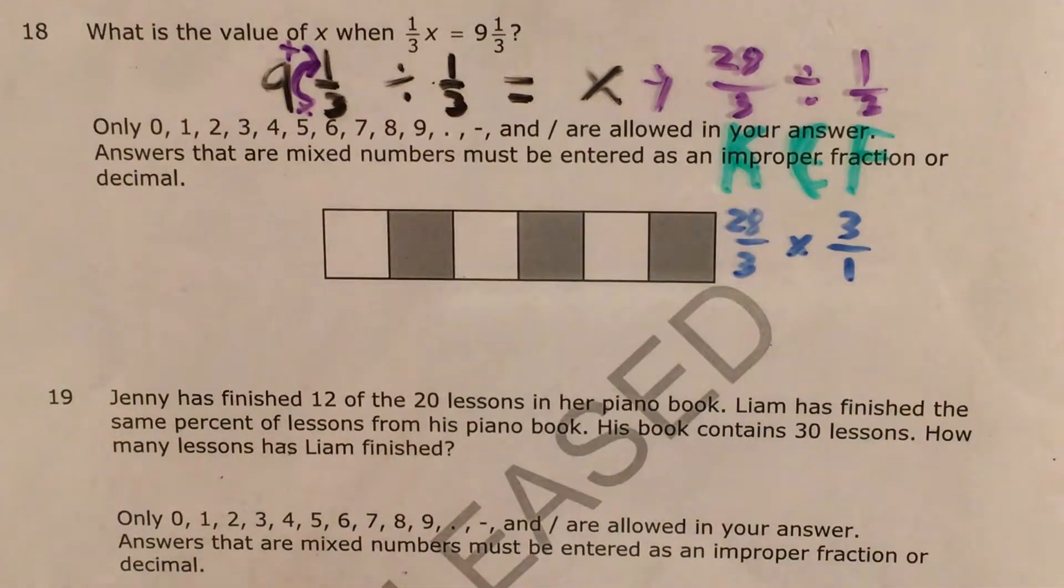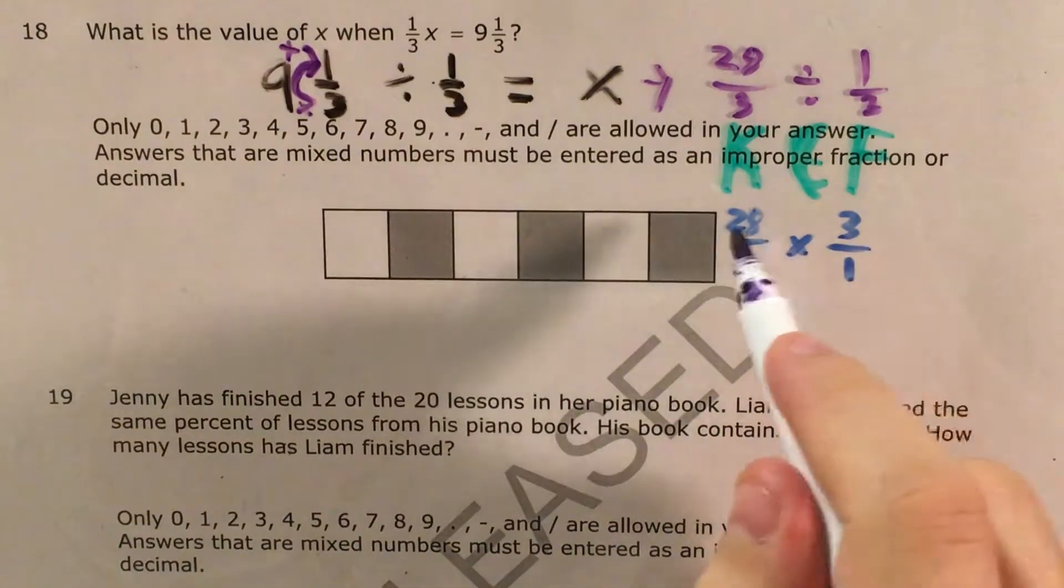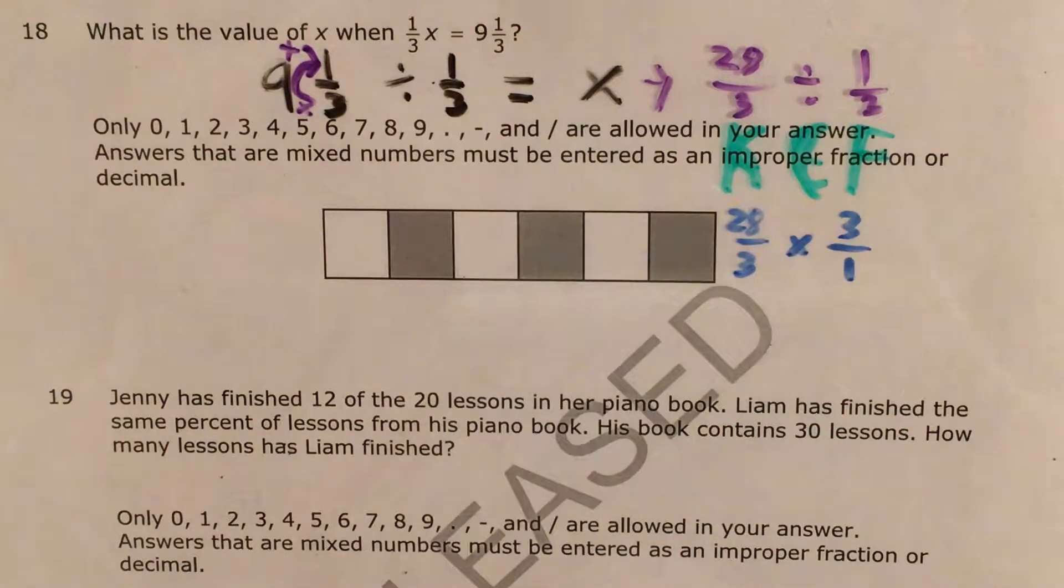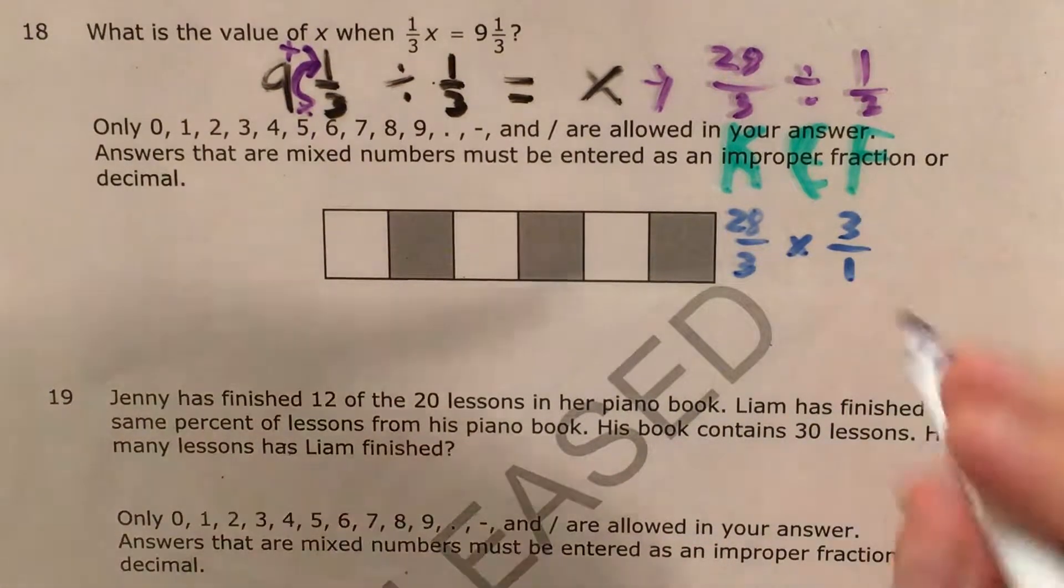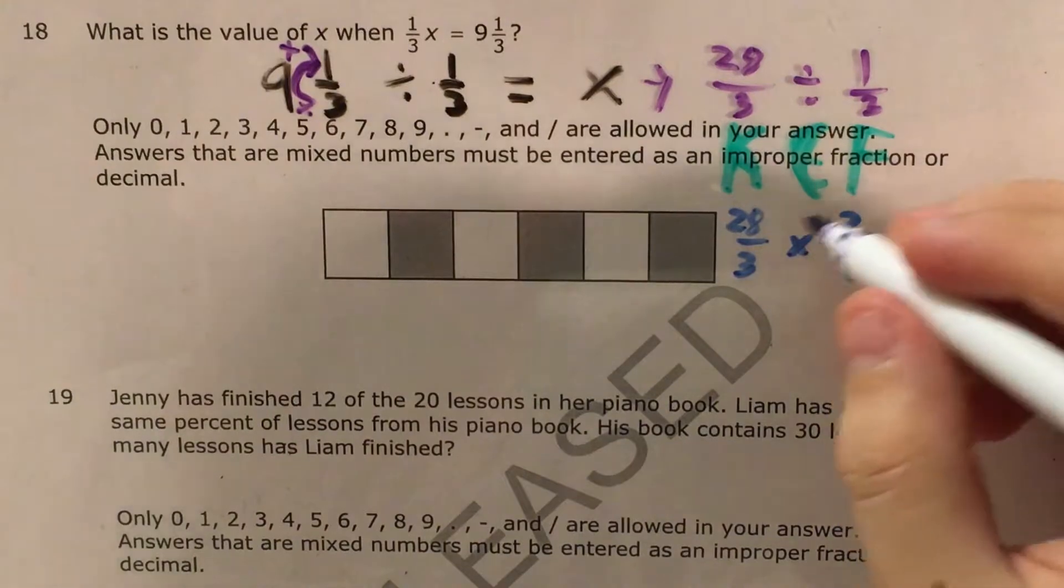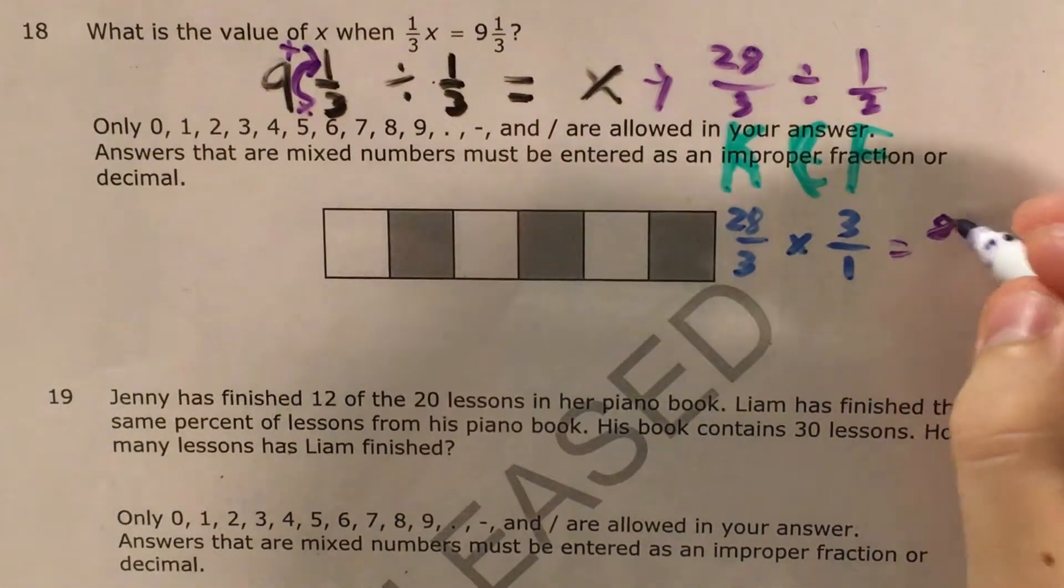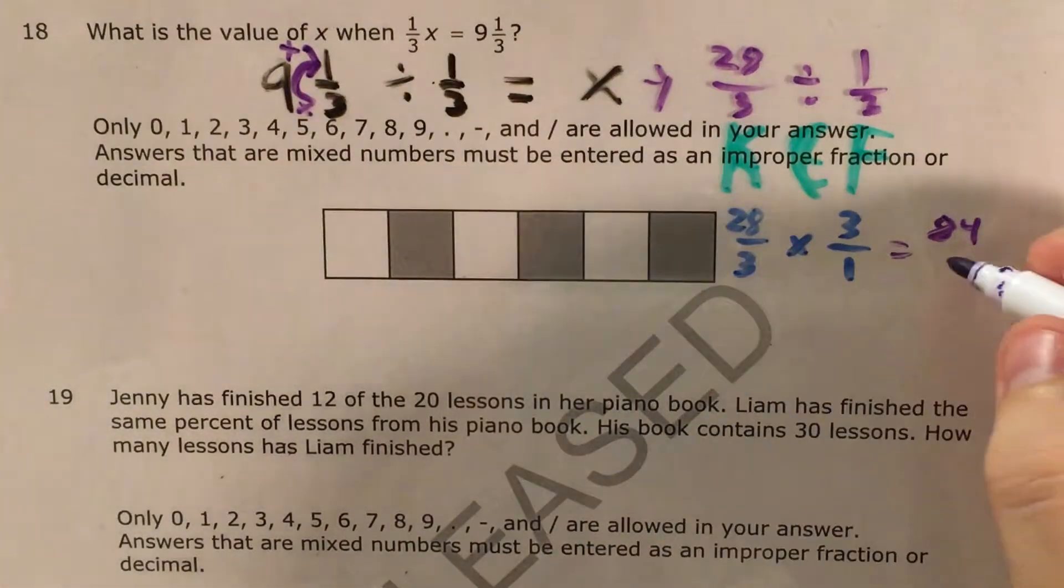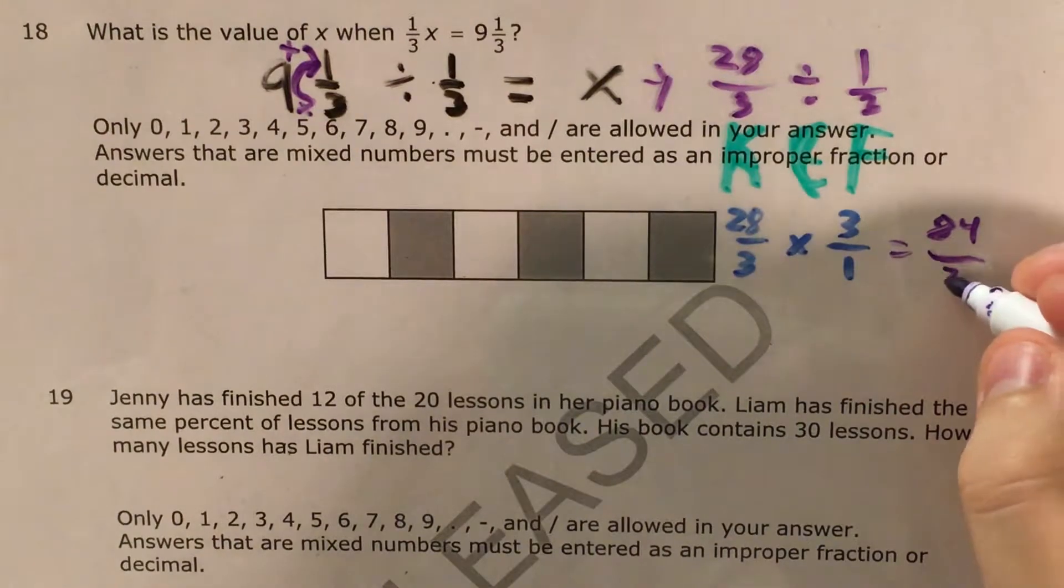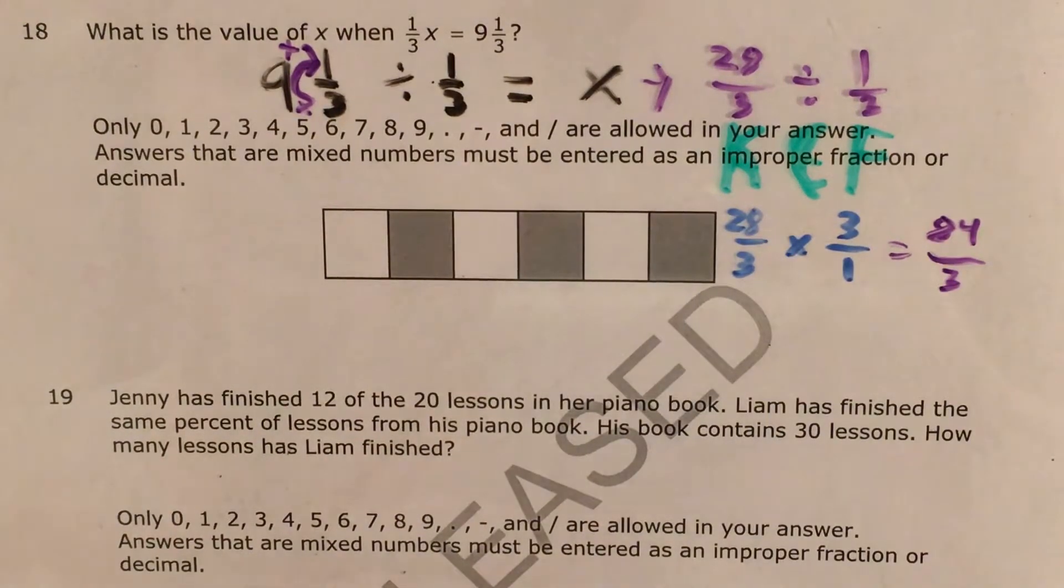And at this point, this is one of those problems where I want to go over the two different ways there are to do this. The first one I'll go ahead and do right now. That's to just multiply across our numerators and denominators and then simplify. So I'll go ahead and do that. 28 times 3, I can do that in my calculator if I want to. It's 84. 3 times 1 is 3. My new fraction is 84/3.